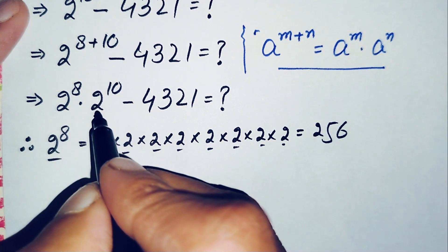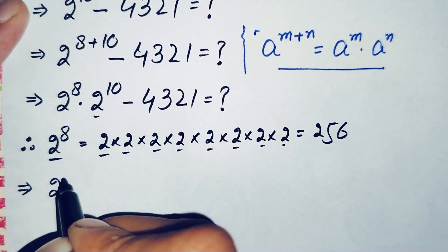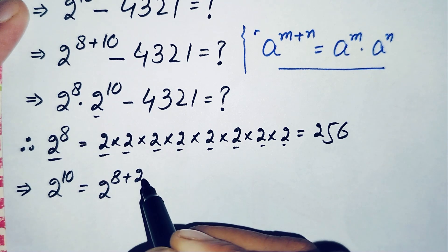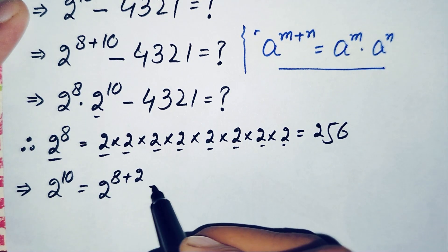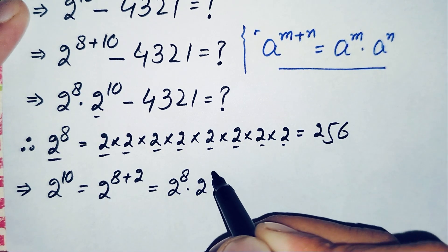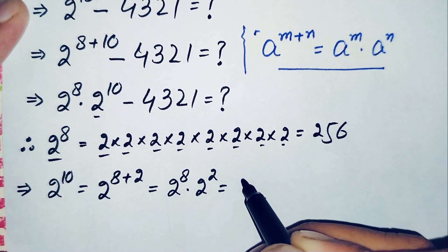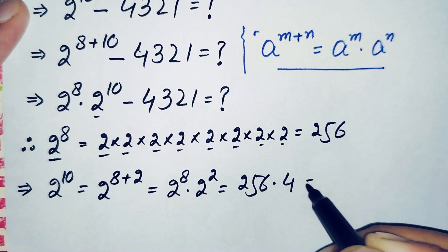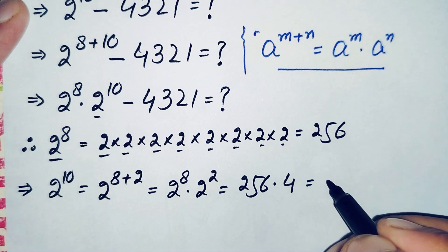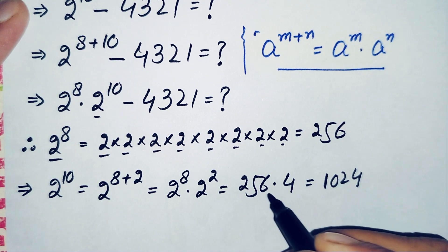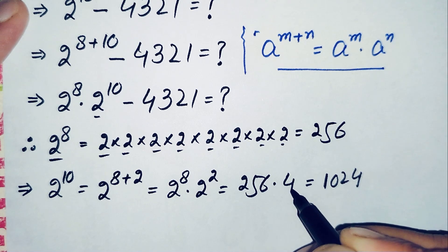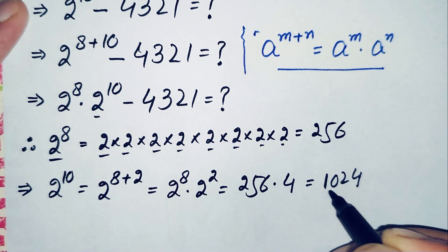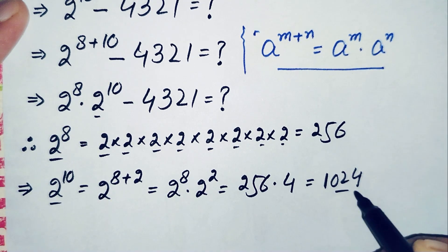To find 2 raised to power 10, we write it as 2^(8+2), which equals 2^8 × 2^2. The value of 2^8 is 256, and 2^2 is 4. So we compute 256 times 4: 4×6=24 (carry 2), 4×5=20 plus 2 = 22 (carry 2), 4×2=8 plus 2 = 10. So the value of 2 raised to power 10 is 1024.